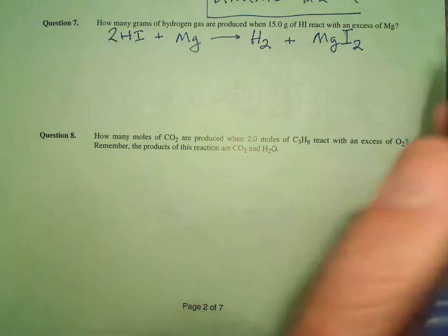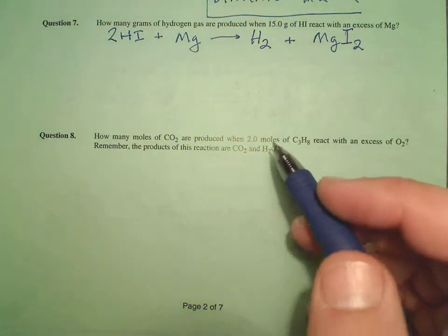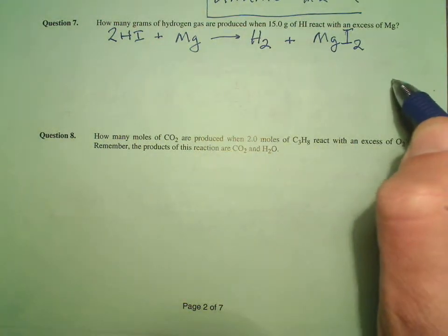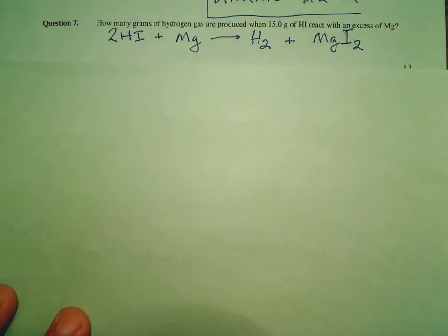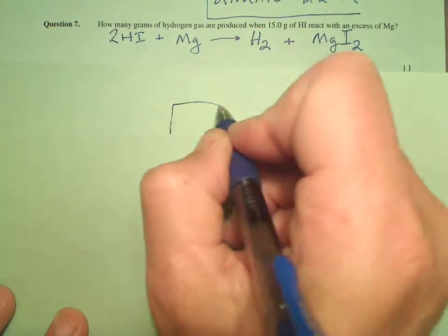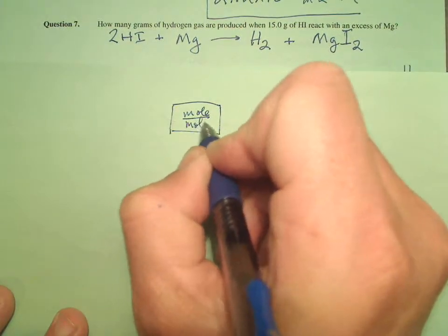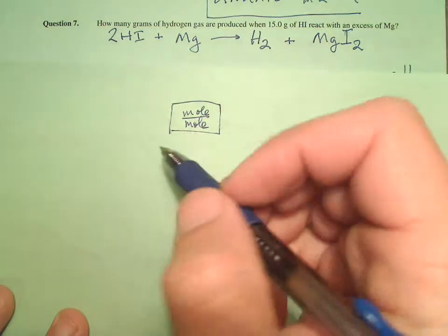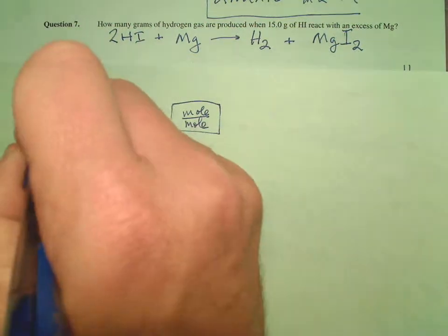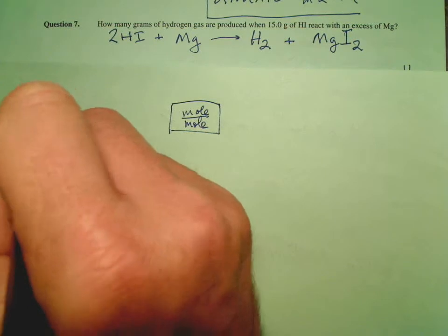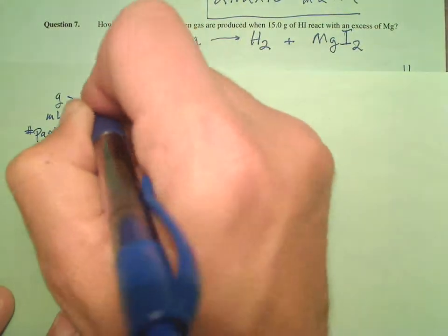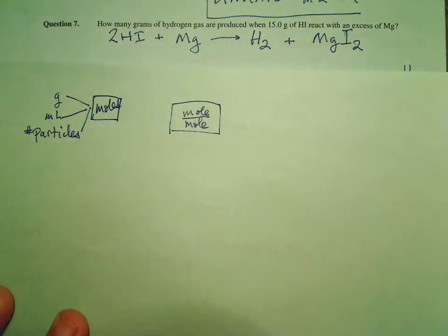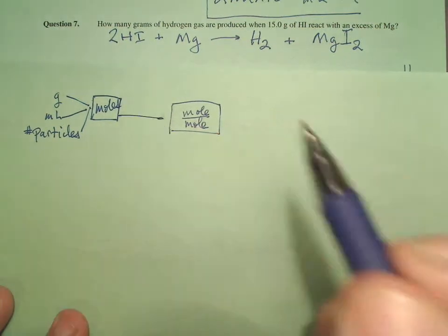Now I have an excess of magnesium, so I don't have to worry about how much magnesium is floating around. All stoichiometry problems have a similar structure — we always have some kind of mole-to-mole ratio. We may start with some units: could be grams, could be milliliters, could be number of particles. Regardless of these, we always want to get them into moles first.